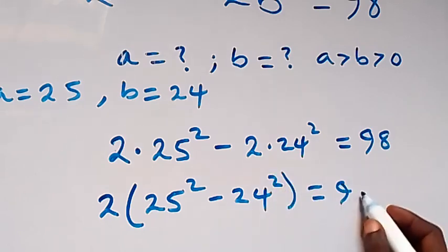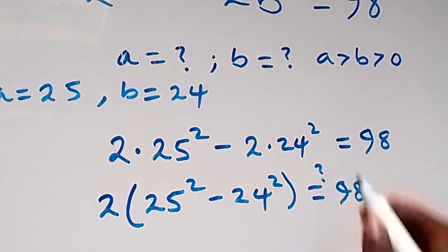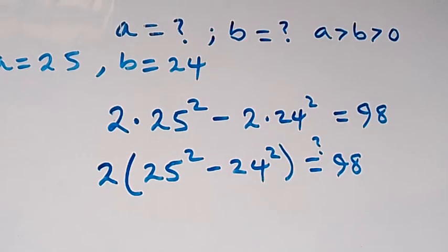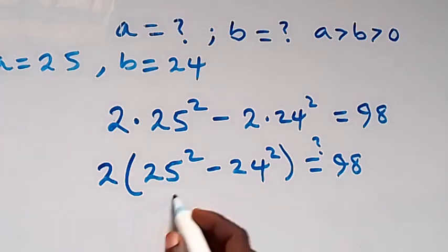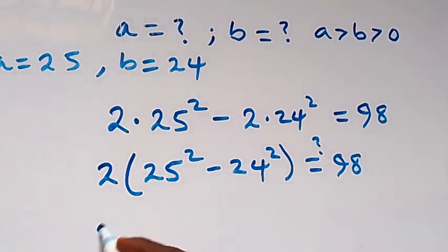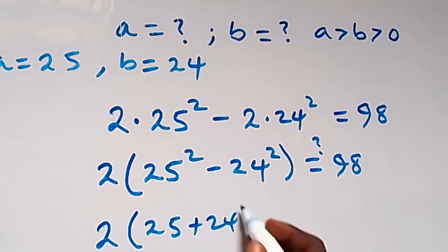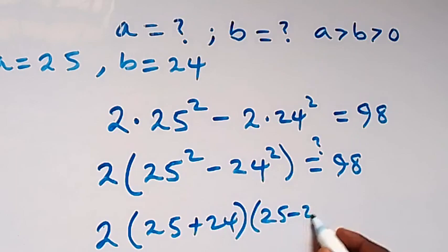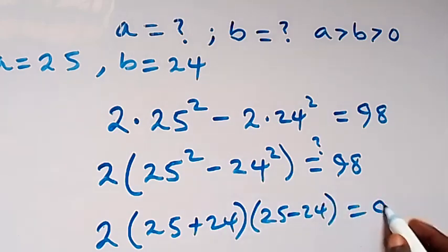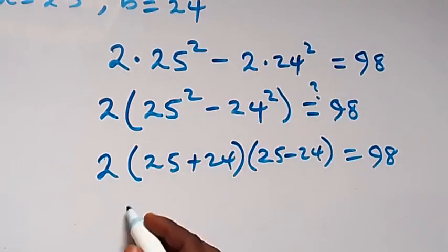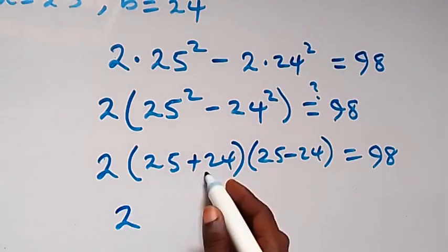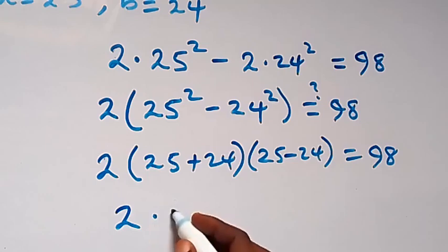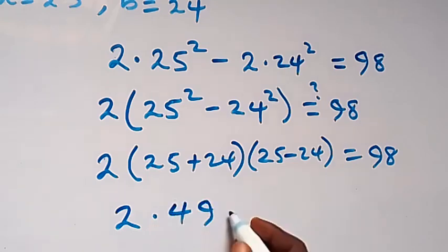Then what we have now here follows from difference of two squares, so we have 2 bracket 25 plus 24 then close bracket, open bracket 25 minus 24, will this be equals to 98.